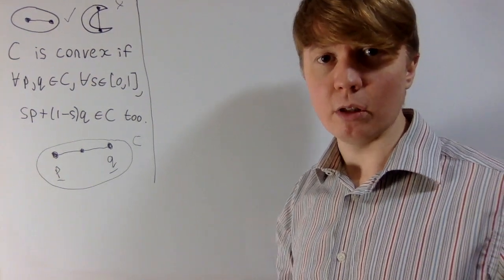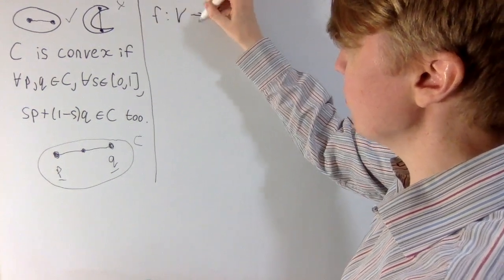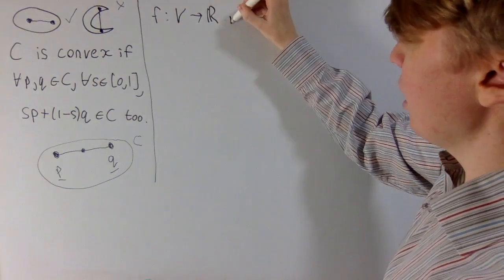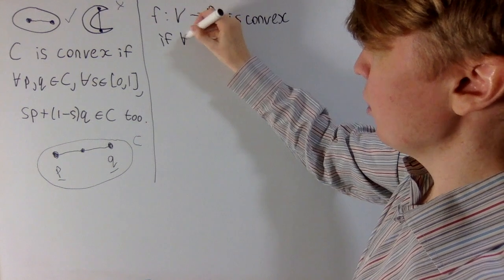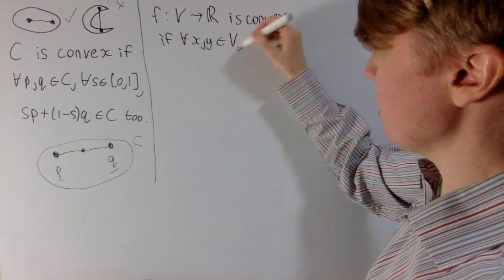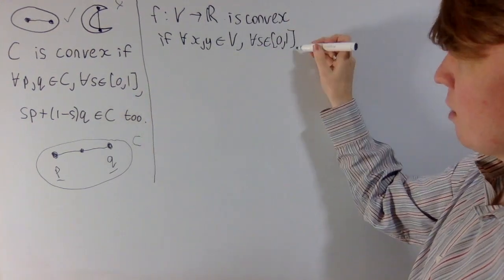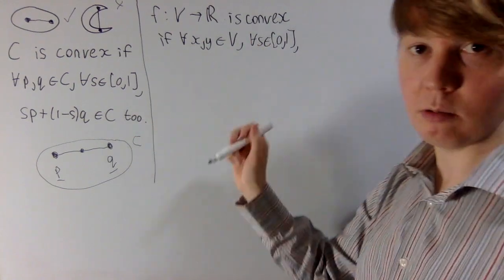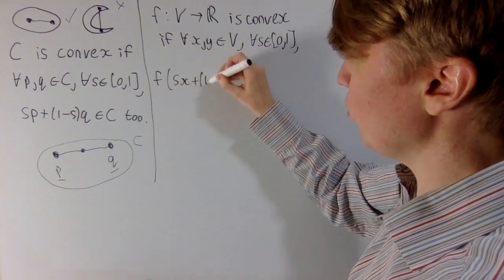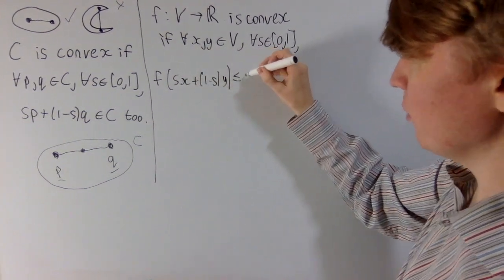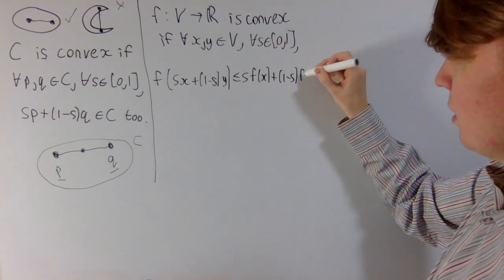What is a convex function? This is related. We say that F, mapping from some real vector space to the reals, is convex if for all X and Y in your vector space and for all S between 0 and 1 — you're seeing a lot of the same structures — instead of something being contained within a set, we need to satisfy an inequality: F of SX plus (1 minus S) times Y must be less than or equal to S times F of X plus (1 minus S) times F of Y.